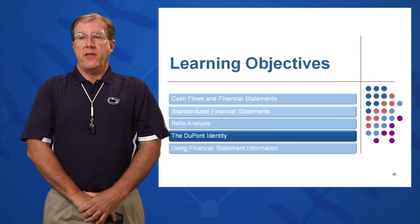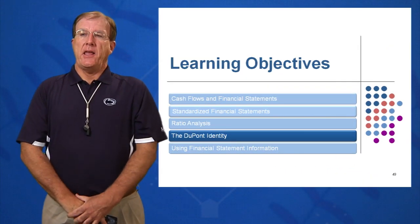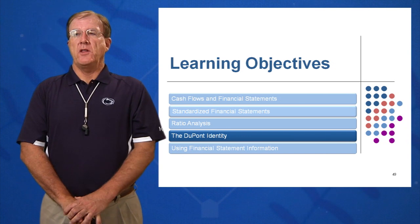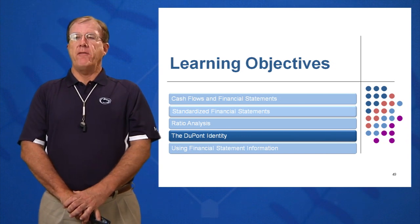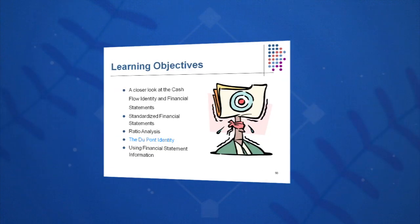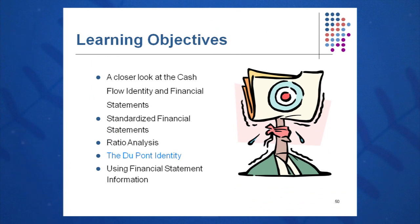Next, we're going to talk about the DuPont Identity. Learning objective number four is the DuPont Identity, which is a measure of return on equity. Return on equity — how do we calculate it? It's net income divided by equity. There's not a lot there to get your hands around if you're having a problem with your ROE. If your return on equity is going down and you want to know how to move it in the right direction, you could look at increasing your net income or decreasing your equity, just on that simple formula.